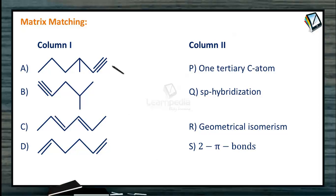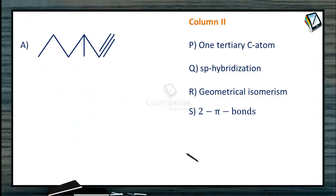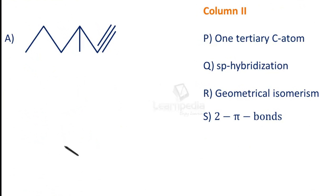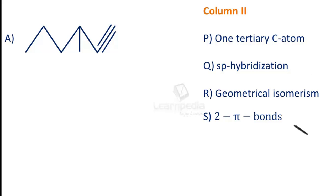In column 1, a set of organic compounds are given and in column 2, we need to check out how many points each organic compound satisfies. The options are: (P) presence of tertiary carbon atom, (Q) hybridization, (R) geometrical isomerism, and (S) presence of two pi bonds.